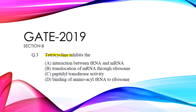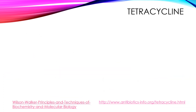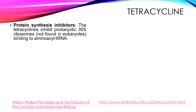Q3: Tetracycline inhibits the — and we have 4 options to answer this question. But first we will learn about its function and then try to answer this question. Tetracycline is an inhibitor of protein synthesis. It inhibits the binding of the 30S ribosome subunit to aminoacyl tRNA. As you know, aminoacyl tRNA provides the amino acid for the elongation of the peptide chain.